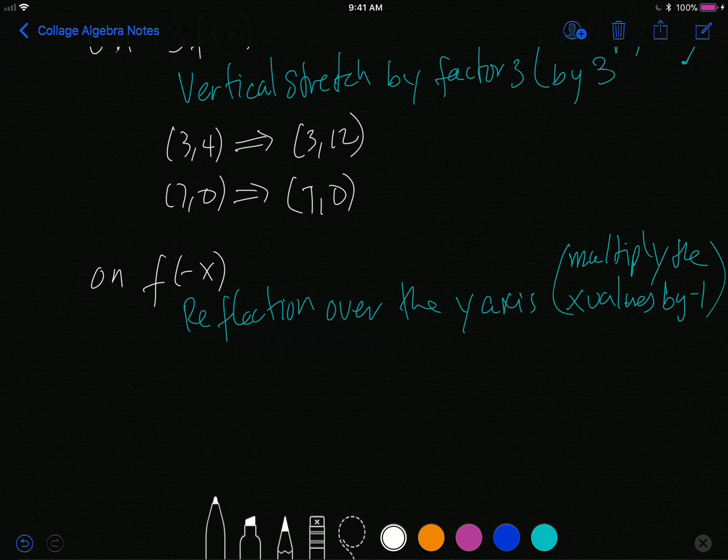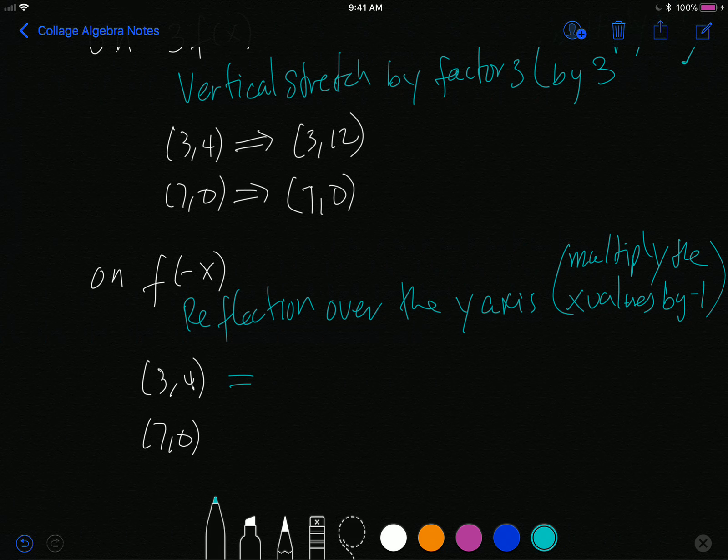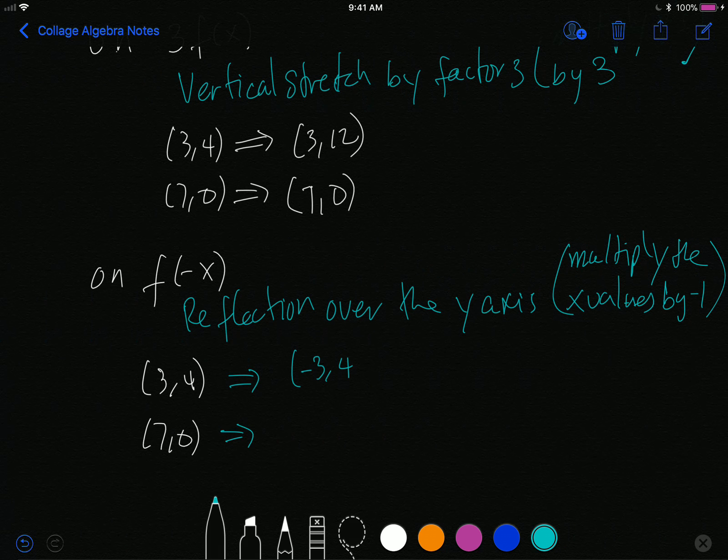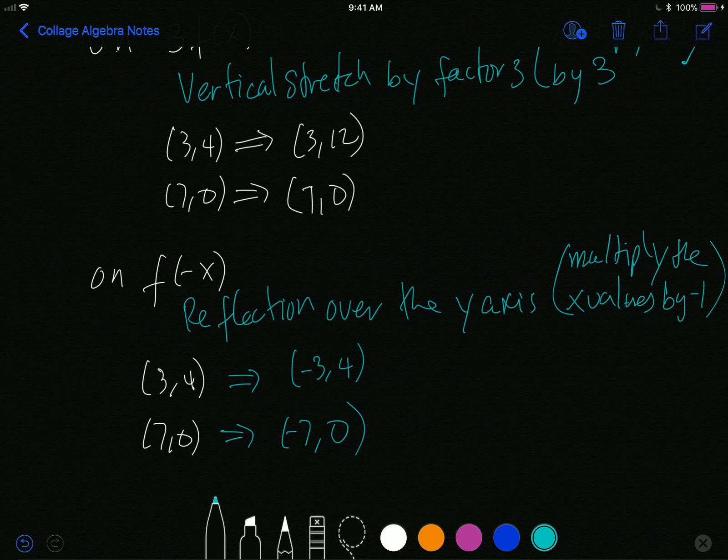And so my original points, (3,4) and (7,0), after the transformation, I will get (-3,4) and (-7,0). So I get a different x-intercept, and my point flips over to the other side of the y axis.